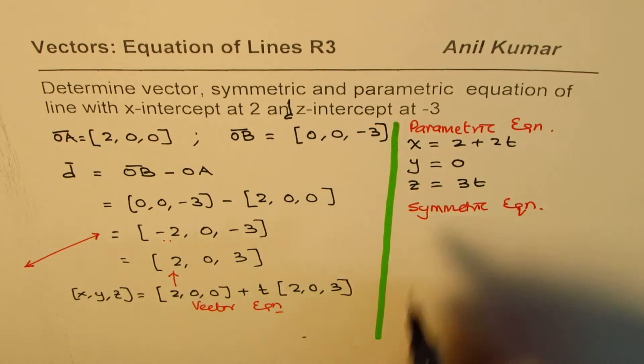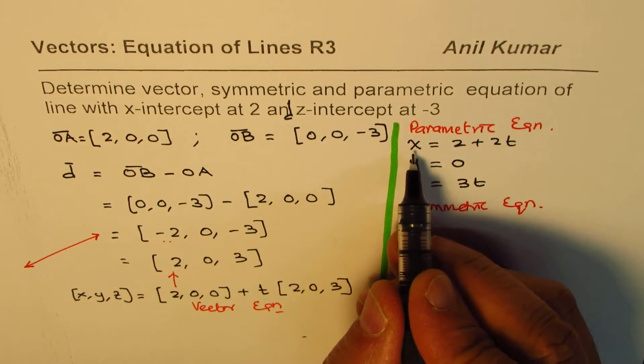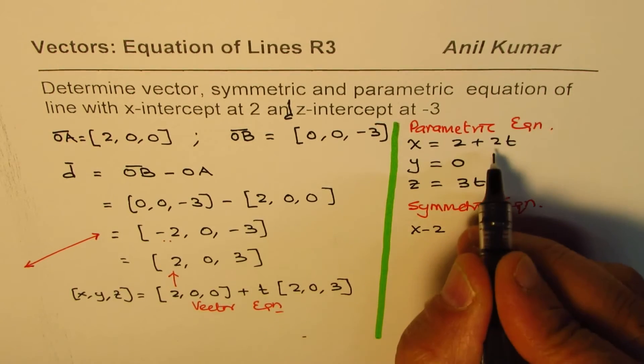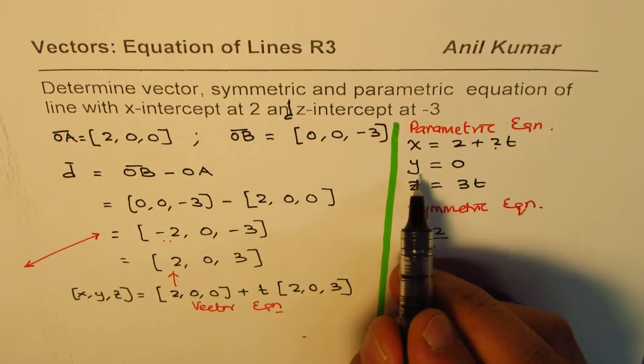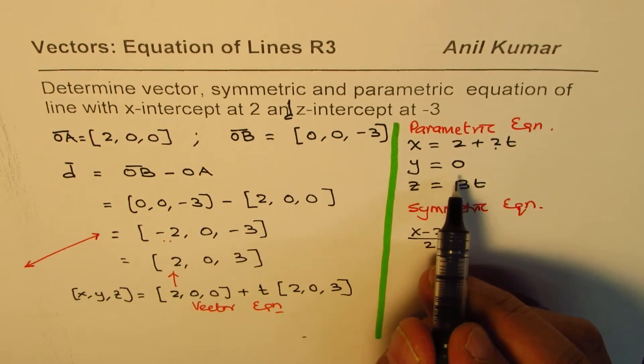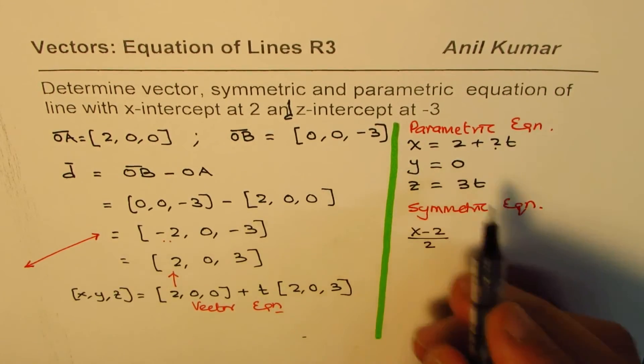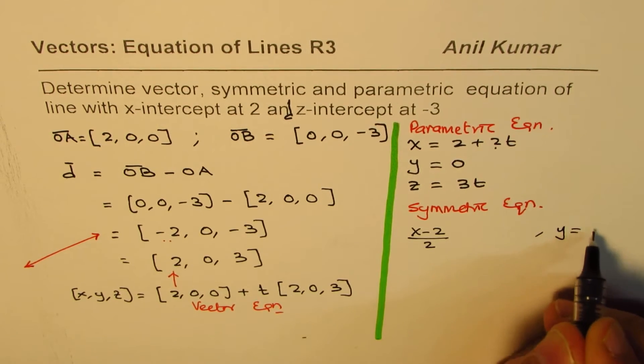In that case, we'll say (x - 2) divided by this 2 is equal to t, right? Now, y is, in this case, always 0. So, we'll keep this separate. We'll write y equals to 0.